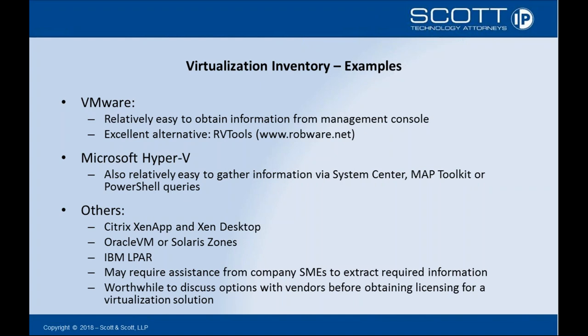If it's a more obscure virtualization technology, you might need to get a bit more creative in how you report on this information, but usually there is some type of automated way to gather it. If you can't gather this information automatically, this is one exception to the manual data collection rule I might allow — because the hardware used to support your virtualization environment, except for very large companies, is usually fairly static and not changing that much from day to day or month to month. So maintaining a manual inventory of your virtualization infrastructure might be appropriate, but only if it's otherwise going to be difficult to use an automated tool. I typically like to gather the information live for purposes of an analysis, because that usually yields a better result.